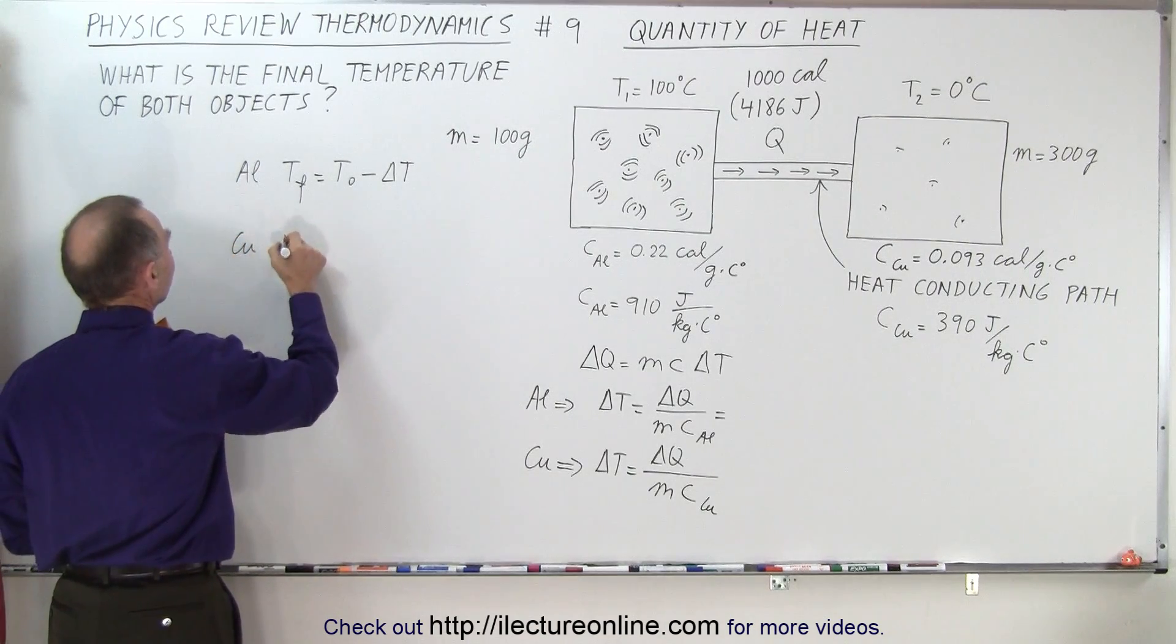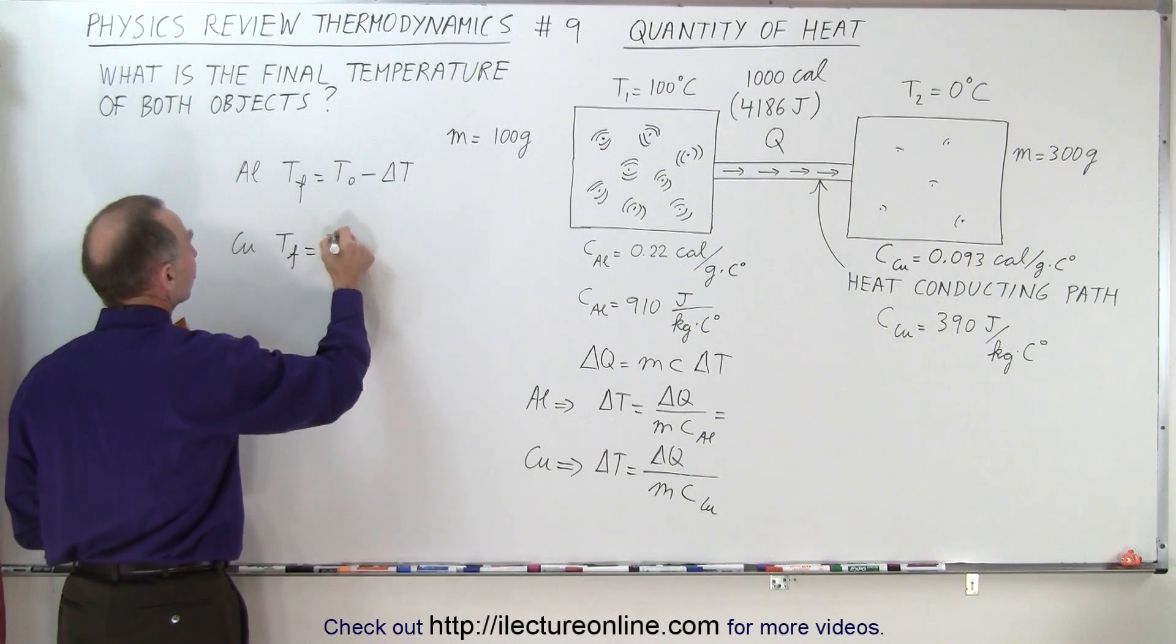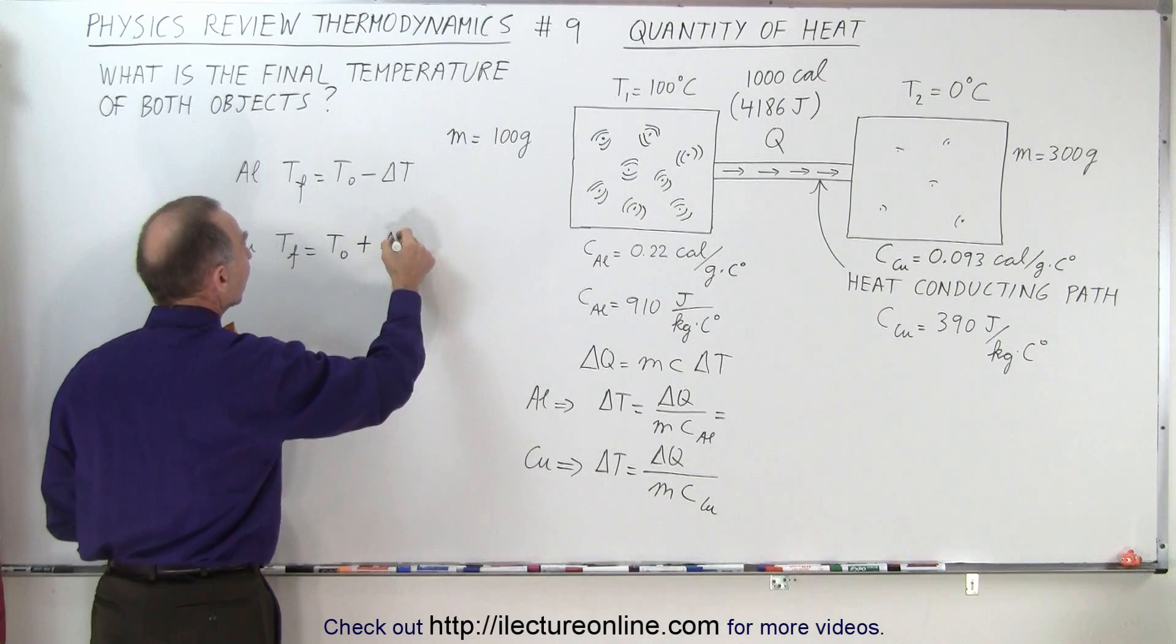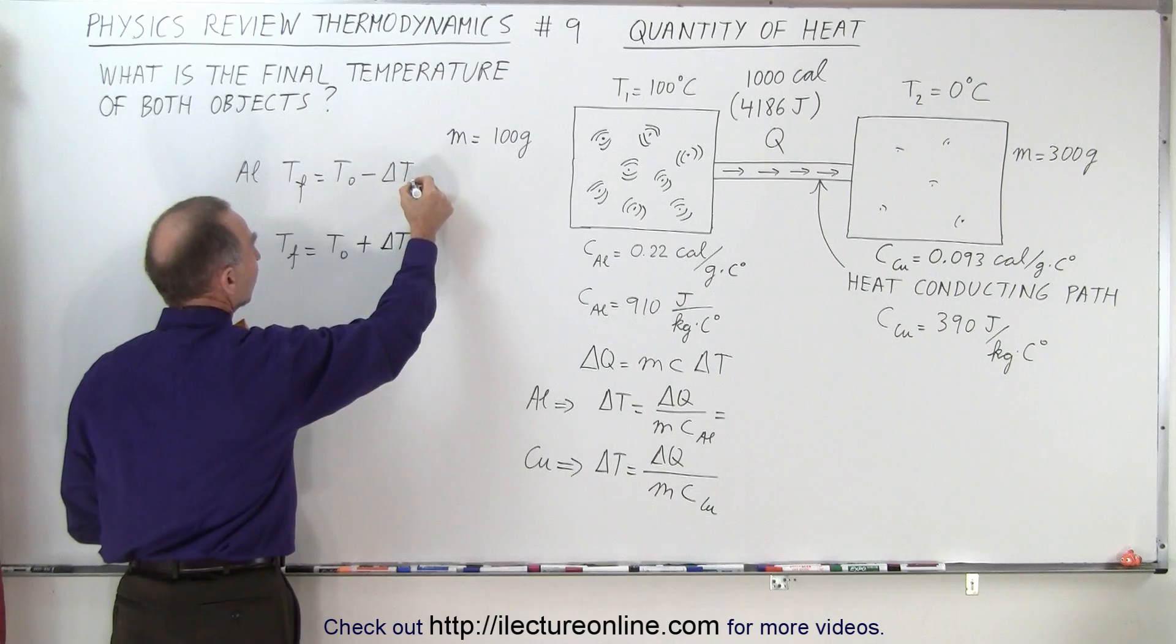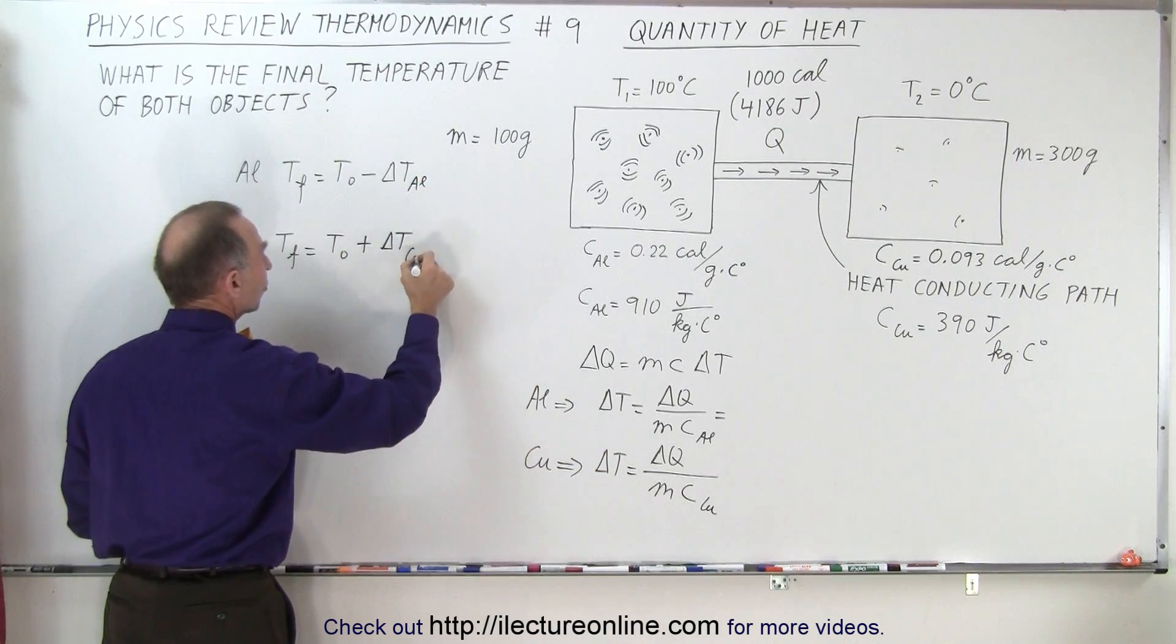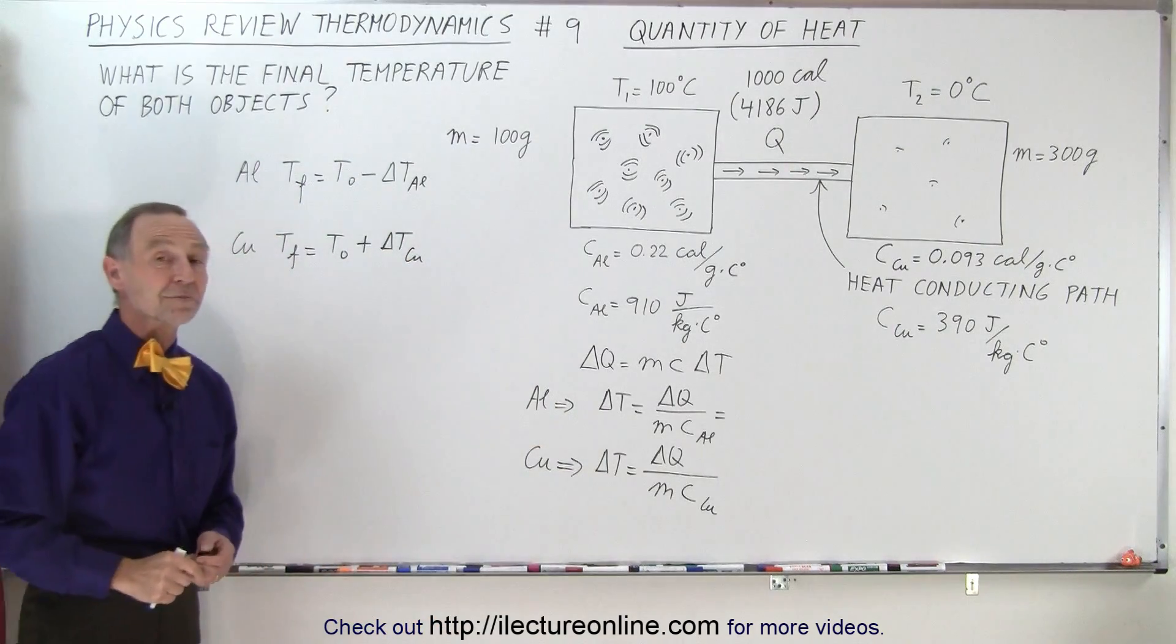For the copper, you can say that the final temperature is equal to the initial temperature that you started with, which in this case is 0 degrees Celsius, plus the change of its temperature. Now this is the change in temperature for the aluminum, which is found using this equation, and this is the change in temperature of the copper, which is using this equation.